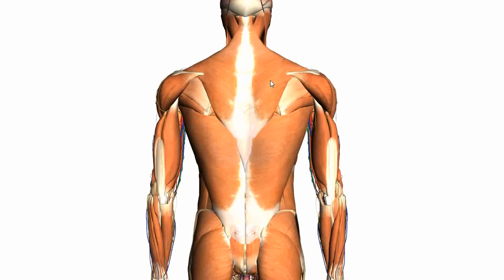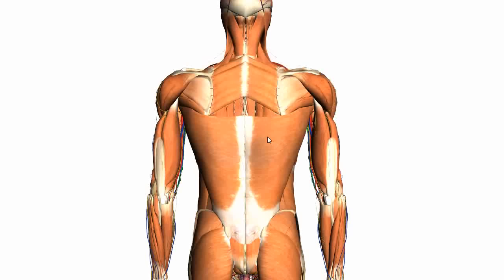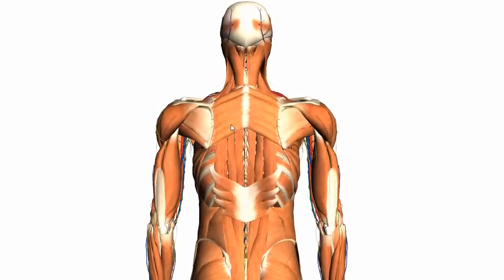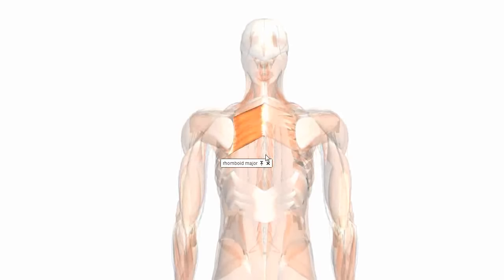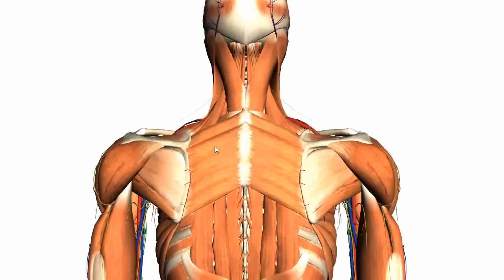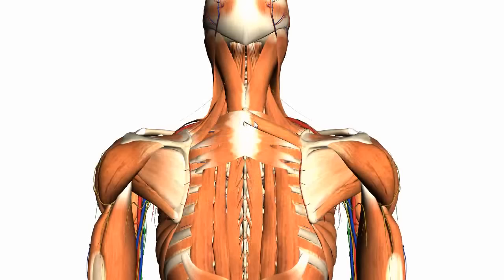Working our way deeper, just underneath the trapezius, you've got the rhomboids — the rhomboid major and the rhomboid minor. These muscles attach to the scapula and they function to keep the scapula pressed against the thoracic wall. When the trapezius is contracted, they can retract the scapula.